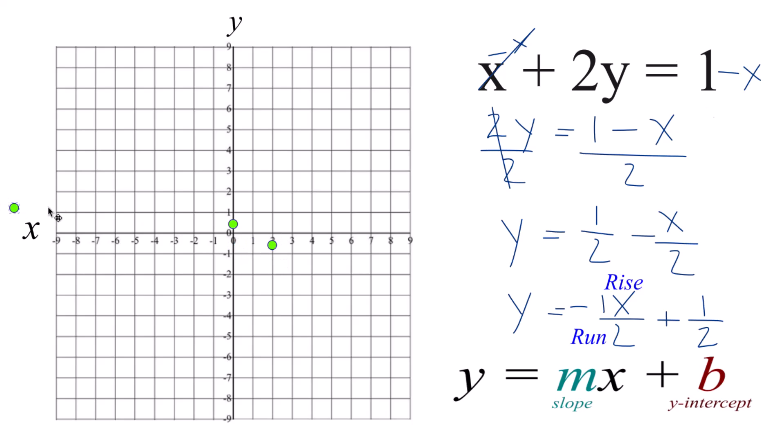From that point, we're going to rise a negative 1, which means we would go down negative 1, run 1, 2. And you can see those points, they're all in a line there. Let's put a line through it.